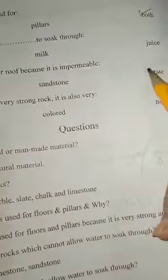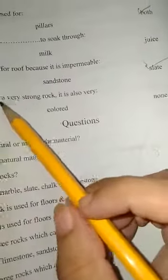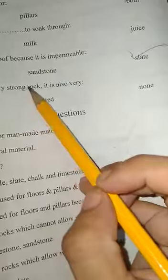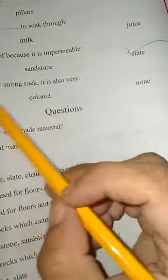Impermeable rocks are limestone, sandstone, and slate. Marble is not only a very strong rock, it is also very beautiful, colored and uncolored.